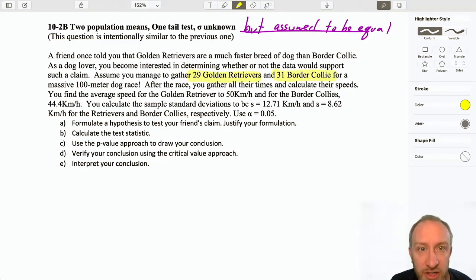We're running them in a 100-meter dog race. After the race, you gather all their times and calculate their speeds. You find the average speed for the Golden Retriever is 50 km/h and for the Border Collie, 44.4 km/h. We have standard deviations here and here. And we're going to test that claim, our friend's claim at alpha = 0.05.